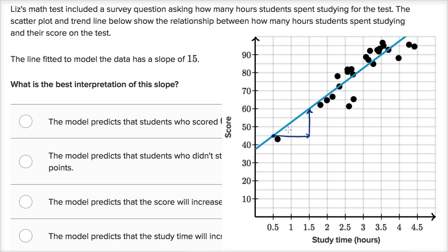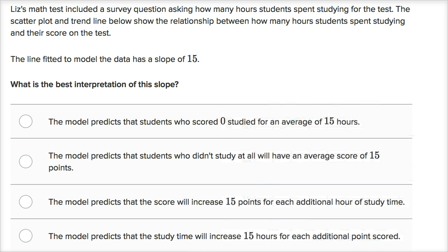Every hour, based on this regression, it's not unreasonable to expect 15 points improvement, or at least that's what we're seeing from the regression of the data. So let's look at which of these choices actually describe something like that.